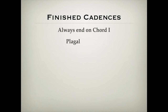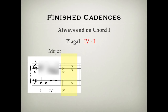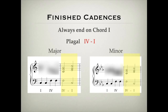So that's the first finished cadence. The second finished cadence is called the plagal cadence. This goes from chord IV to chord I. This again sounds finished, but it's a gentler finish than the perfect cadence. It's sometimes called the Amen cadence because it's often used in very traditional hymns to sing 'Amen' at the end of the hymn. You can hear how it sounds finished but it's a gentler finish than the perfect cadence, both in C major and C minor.